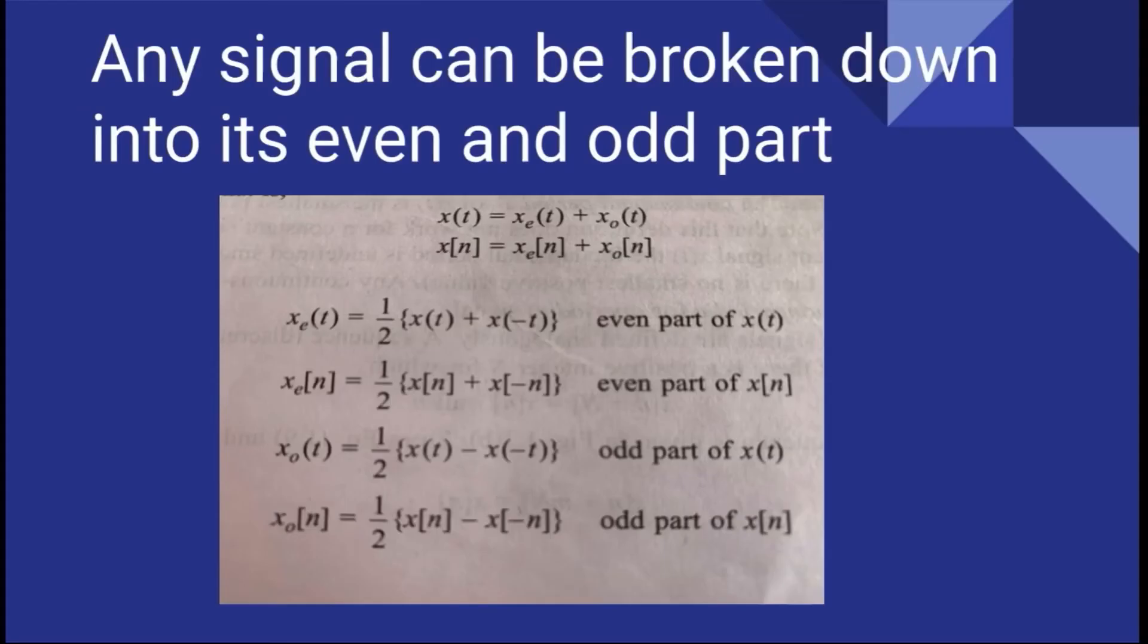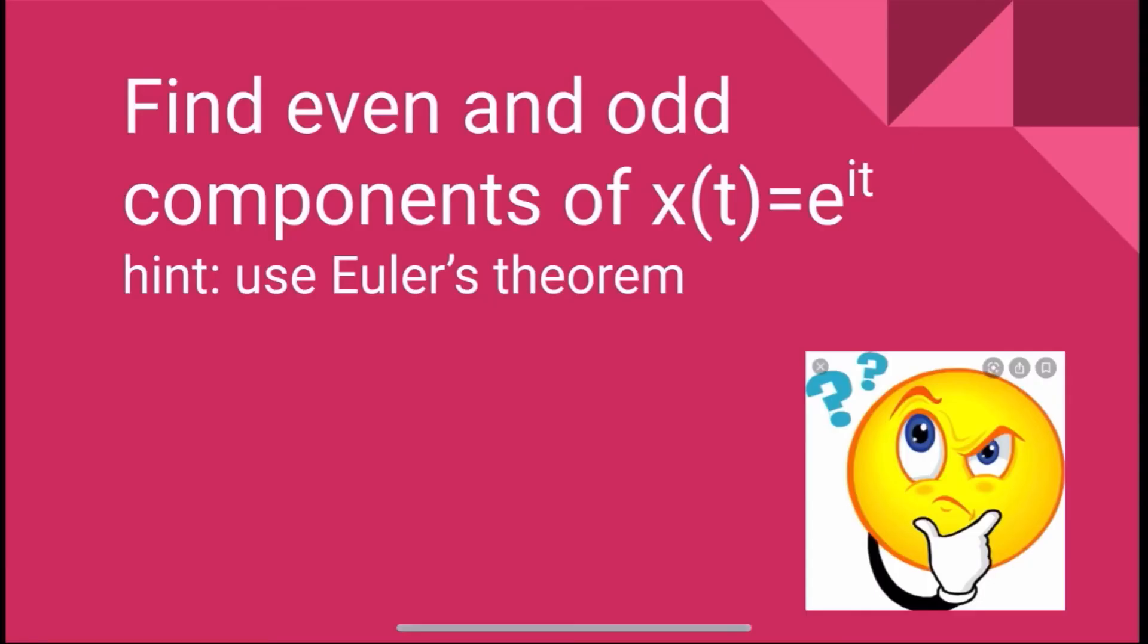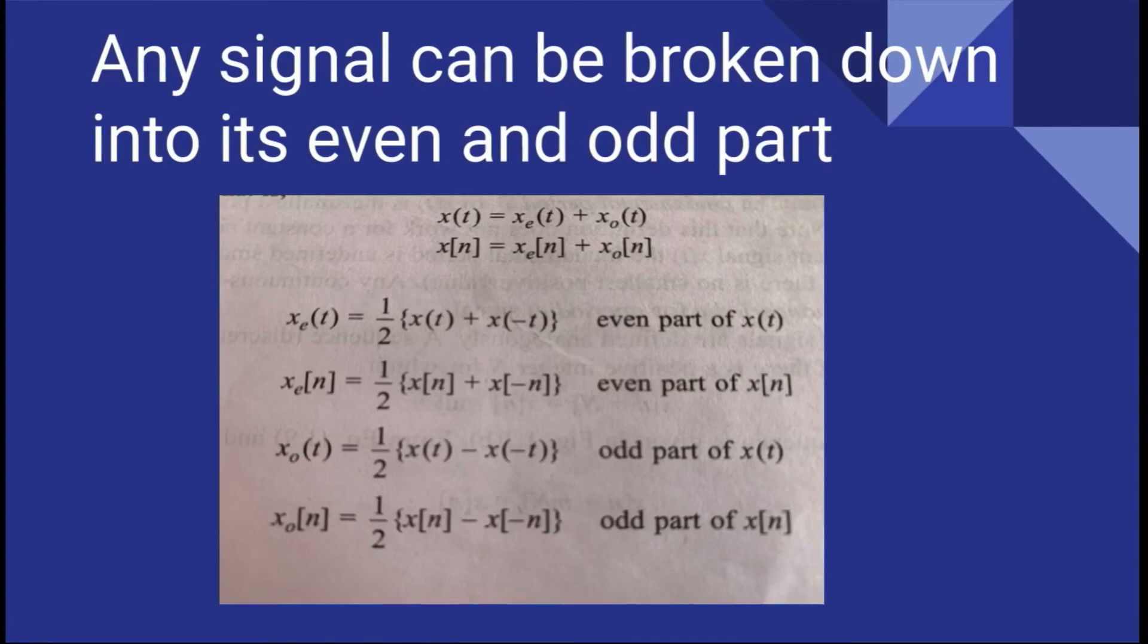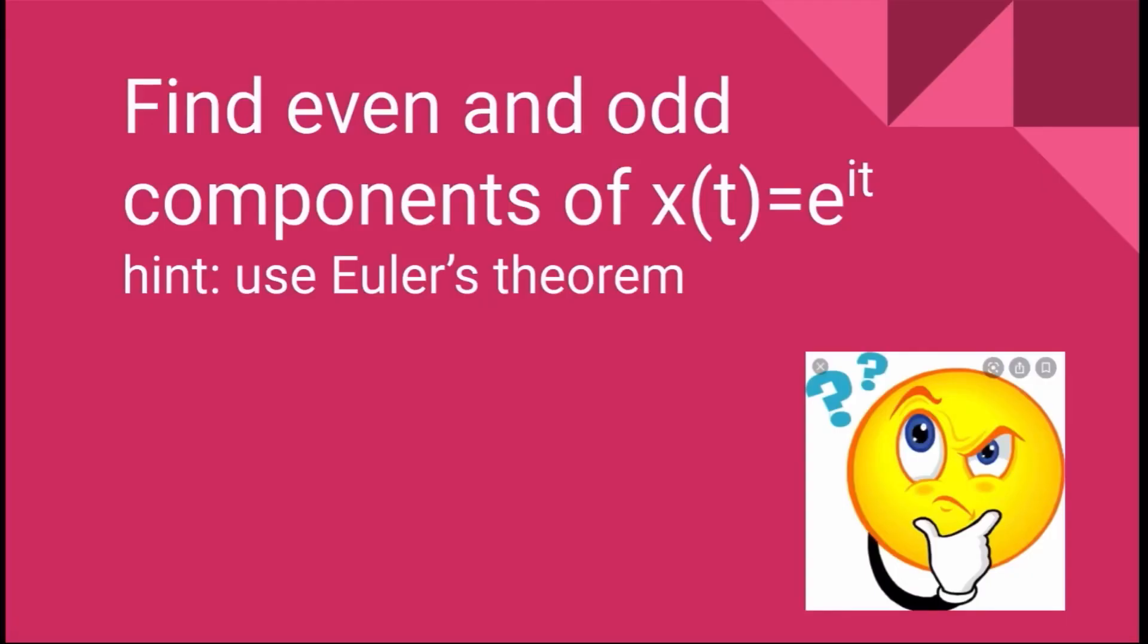Next is any signal can be broken down into its even and odd part. You can see this expression here. Your x(t) can be broken down into x_e is your even part and x_o is your odd part. So x even is defined by this equation, that is half of x(t) plus x(-t). Odd part is half of x(t) minus x(-t). You have to remember these two equations. And then by this way you can actually break any signal into its even and odd parts. So you know this equation here. So can you find the even and odd component of your x(t) is given by exponential of jt? This is a question for you, assignment question you can take it as. And you have to use Euler theorem for that. This is a hint for it.